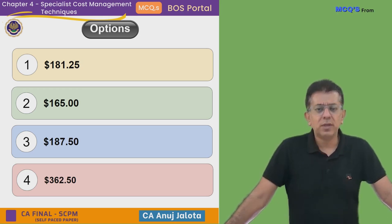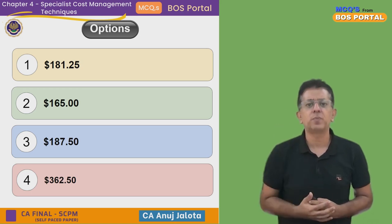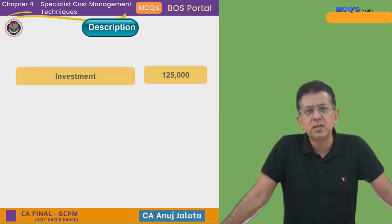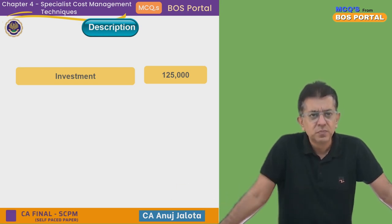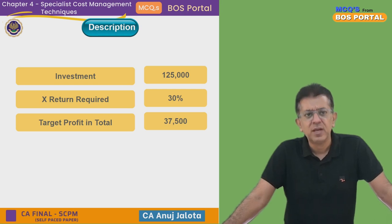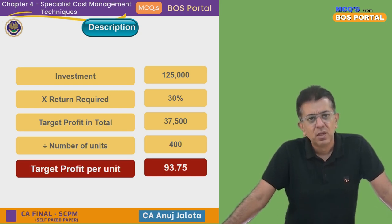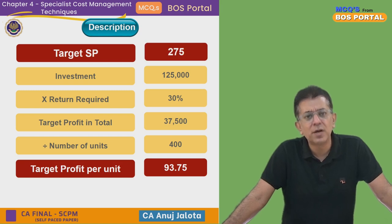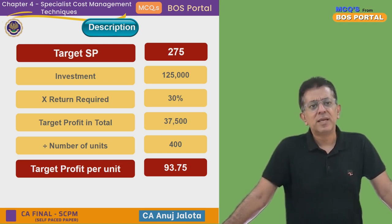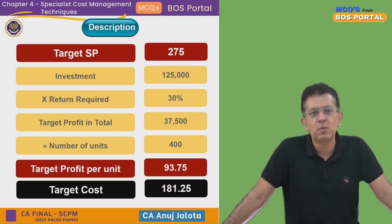I'll solve this in two steps: first find the target profit, then subtract it from the target selling price to get target cost. Investment required is $125,000, multiplied by the required return of 30 percent, giving a total profit of $37,500. Dividing by 400 units, the profit per unit is $93.75. Target selling price is $275, so target cost equals $275 minus $93.75, which gives $181.25.